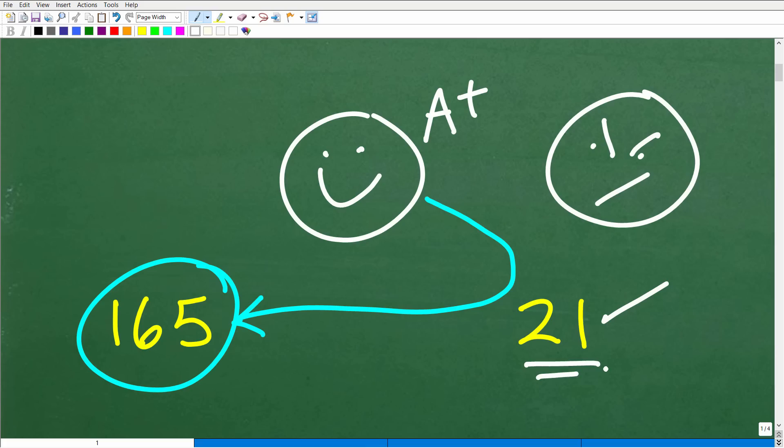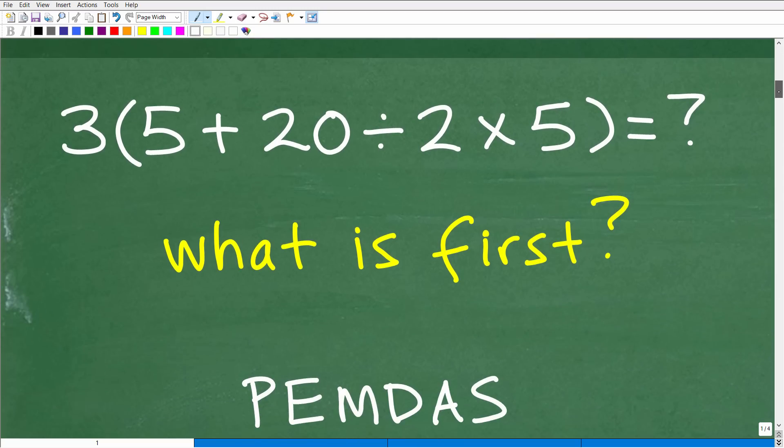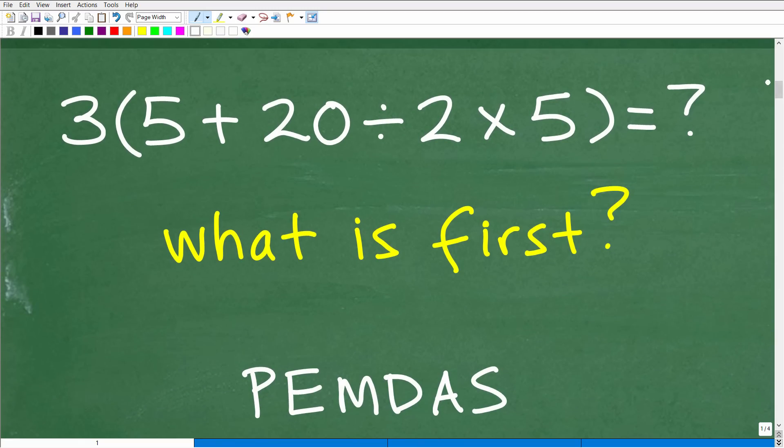If you got 21, I'm glad you did this incorrectly because I'm going to fix this misunderstanding. Once you understand this, you'll be able to get these answers right every single time. This is not that difficult of a problem on the surface.